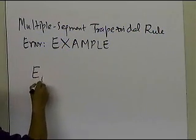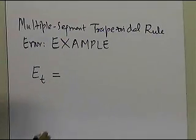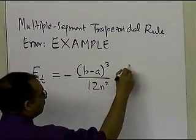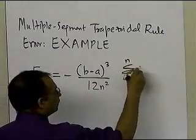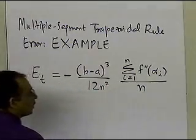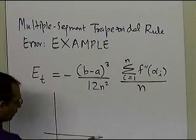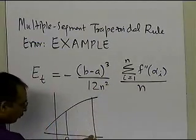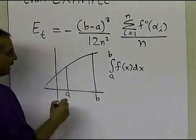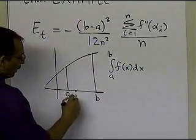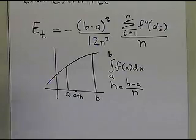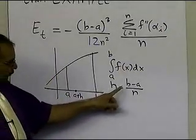The true error for the multiple segment trapezoidal rule is exactly given as minus (b minus a) cubed, divided by 12 n squared, times the summation of second derivatives of the function at certain points, divided by n. This comes from integrating a function from point A to point B using n segments, where h is the width of the interval divided by n, giving a segment width of (b minus a) divided by n.